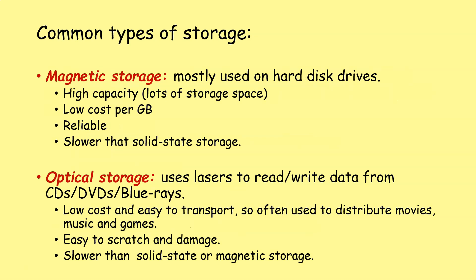Magnetic storage is mostly used on hard disk drives, though sometimes magnetic tape is used for archiving or long-term storage of data. Typically nowadays, the hard disk drive is the primary method for magnetic storage. The main advantage is that it has very high capacity — you can have multi-terabyte hard drives with lots of storage space — and that is available at a low cost per gigabyte. It's very inexpensive. Magnetic storage is reliable; however, it is slower than solid state storage in terms of read/write speeds and access speeds, as the drive spins up and the read/write head moves to the right location.